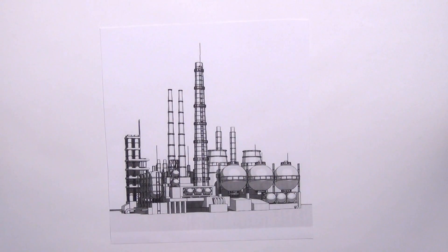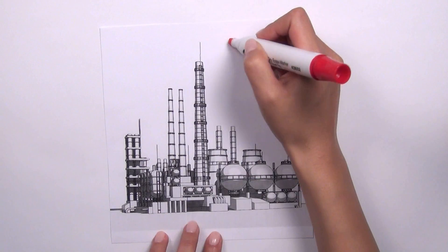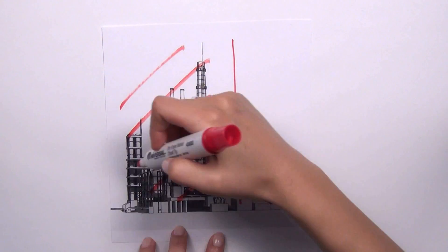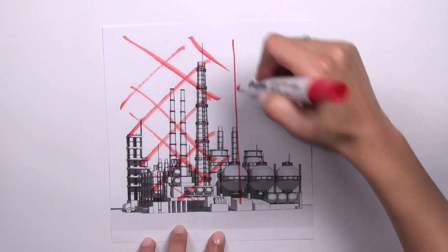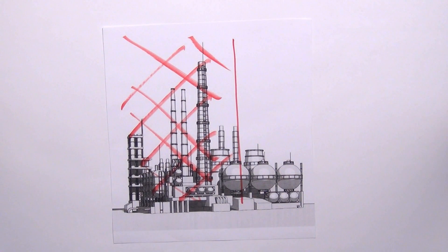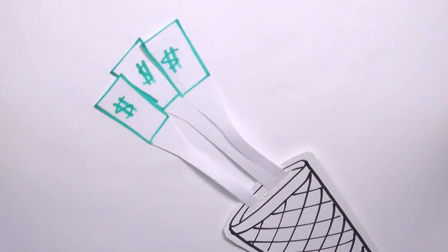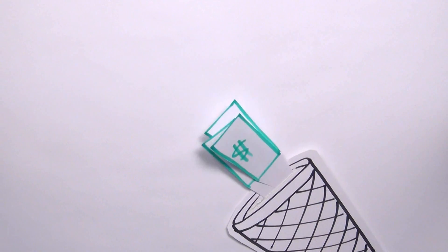Did you know that two-thirds of the loops in a plant are not functioning properly or as per design? 10-30% of loops may be in manual, and 25-50% of operator actions are operators making manual adjustments to valves. By not focusing on a plant's control assets by tuning loops, it's like throwing money away and losing profitability.